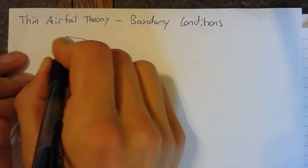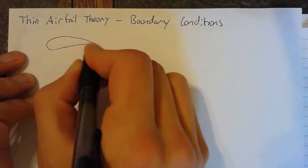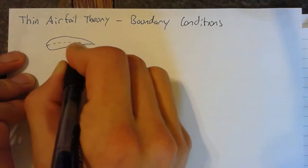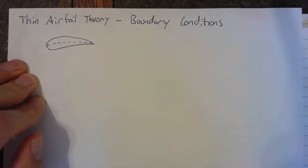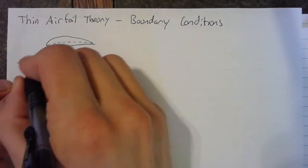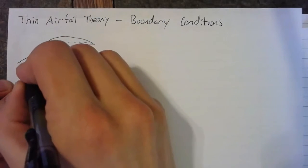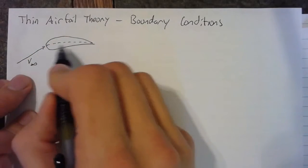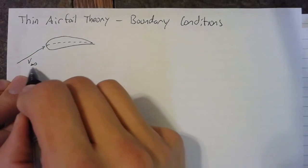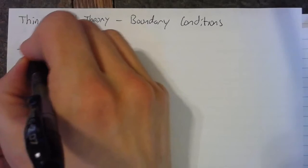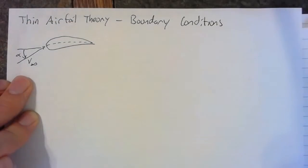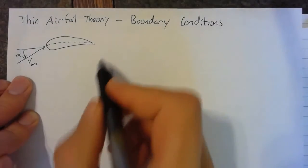So again, we're going to be looking at some airfoil that we're approximating as a vortex sheet along the camber line. And the inflow condition for our vortex sheet is going to be some V infinity, which has some angle of attack alpha compared to the chord line.